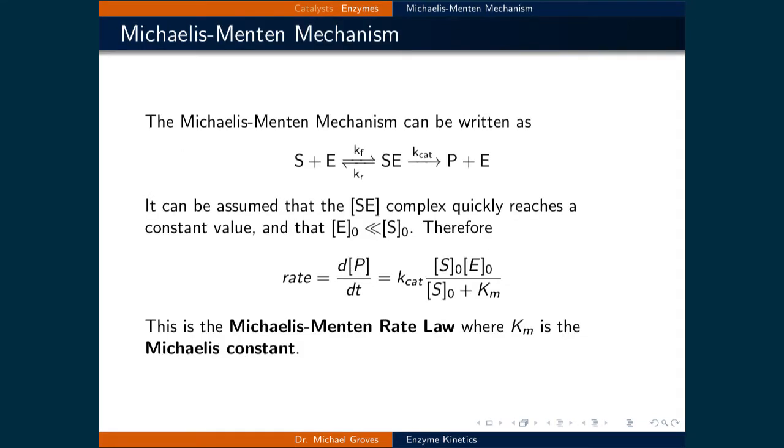The Michaelis-Menten mechanism can be written quantitatively as a specific substrate and an enzyme form an equilibrium with a combined substrate enzyme complex with rate constants for the forward and reverse reactions Kf and Kr respectively. This complex then reacts to form the product and regenerate the enzyme with a rate constant of Kcat.